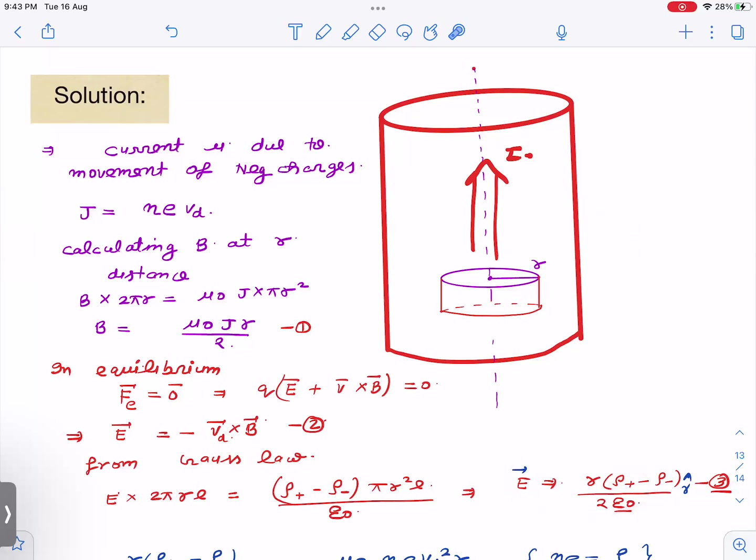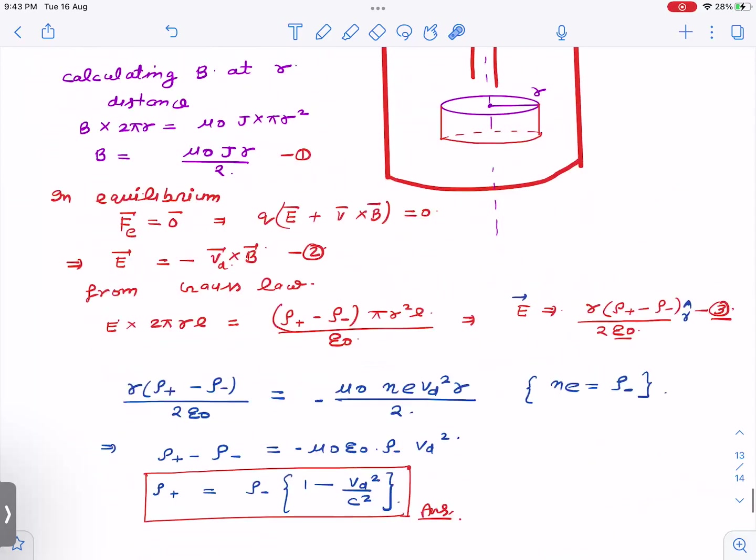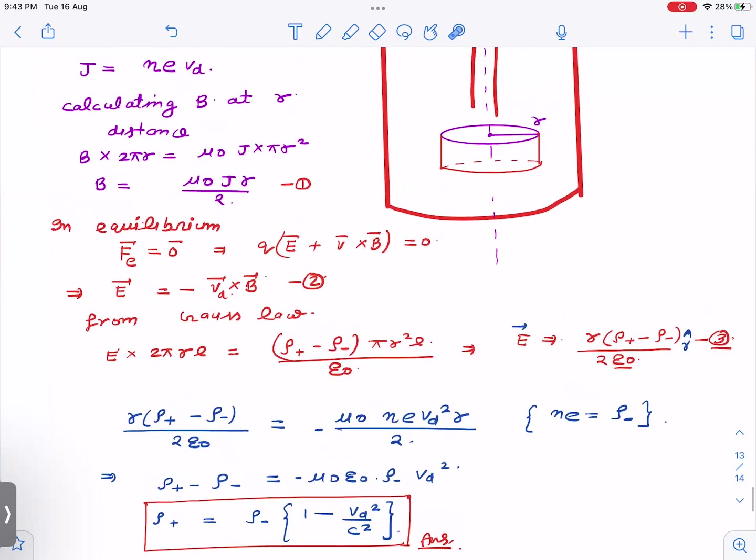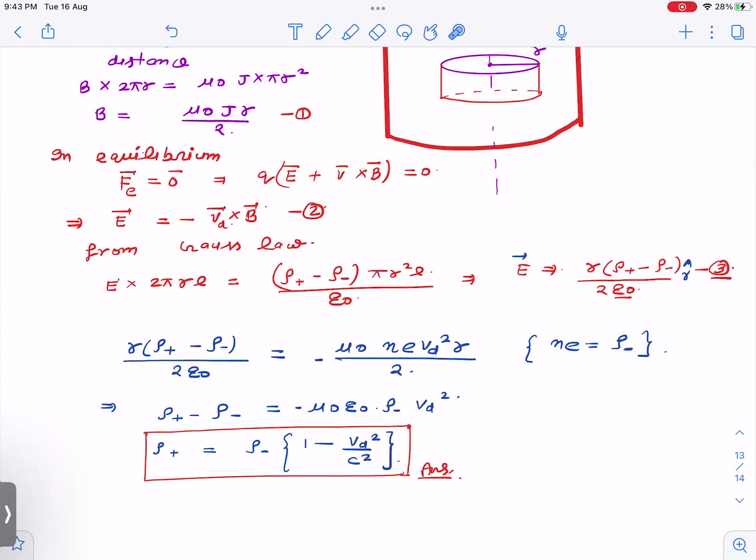We are now almost done. This is electric field, this is magnetic field, and J value we already know. What is the value of n times E? This number of electrons per unit volume times charge on one electron, we can call this as rho minus. Let us just equate everything we have calculated. This is electric field, and this equals mu naught J R by 2. J here is nEVD. nE I have written as minus rho E. This becomes minus mu naught nE VD squared R divided by 2. Here nE I am writing as rho minus. So R and R cancels, 2 and 2 cancels, you get mu naught epsilon naught and rho minus VD squared. Mu naught epsilon naught is one upon c squared. So rho plus becomes rho minus times one minus VD squared by c squared.